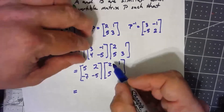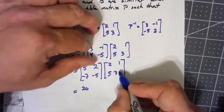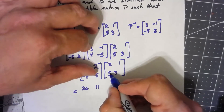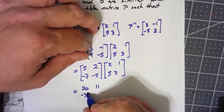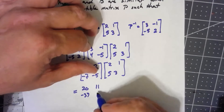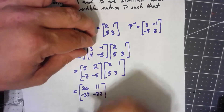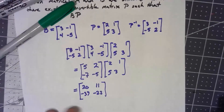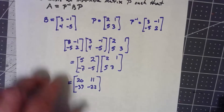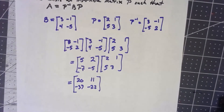Then multiplying by P: 10 plus 10 is 20; 5 plus 6 is 11; negative 14 minus 25 is negative 39; and negative 7 minus 15 is negative 22. So by our definition, the resulting matrix [20, 11; -39, -22] is similar to B.